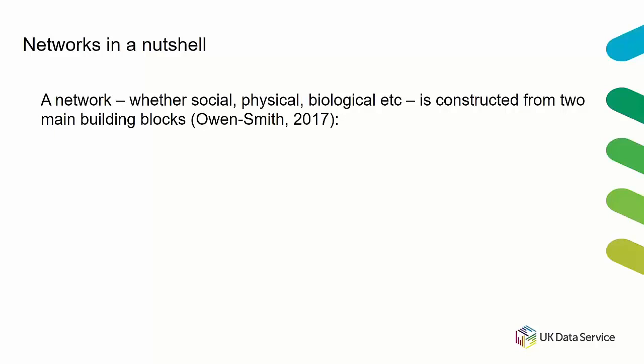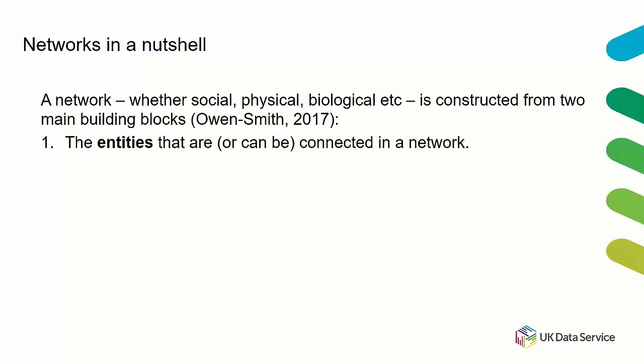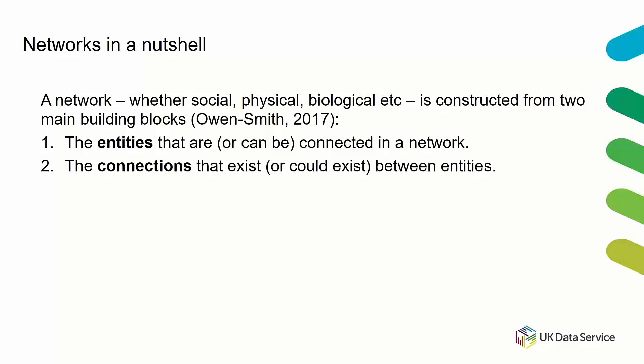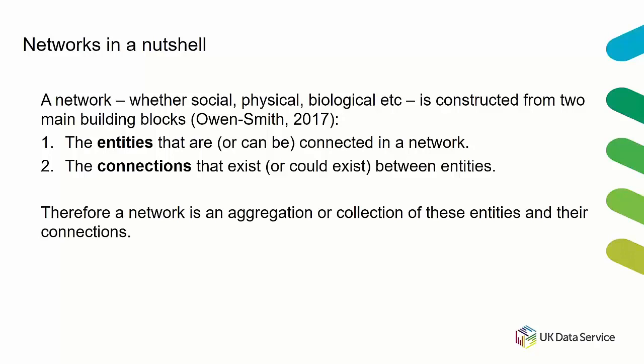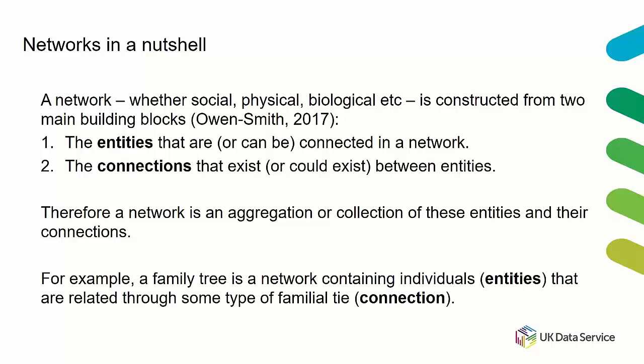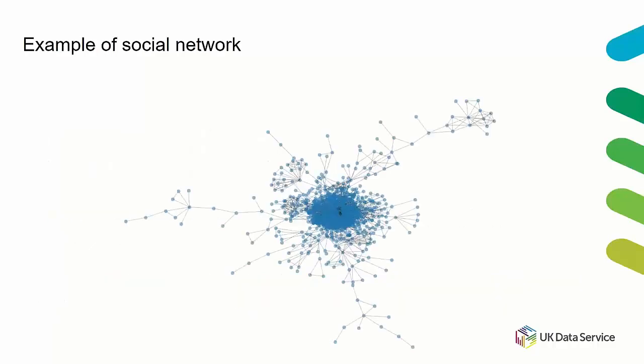To keep key terms in mind: a network is constructed from two main building blocks. There are the entities that are or could be connected - the people, organizations, animals, countries, places - whoever the units of analysis are in your study. And there are the connections that exist or could exist between these entities. A network is an aggregation or collection of these entities and the connections formed between them. A family tree is a simple example of a network.